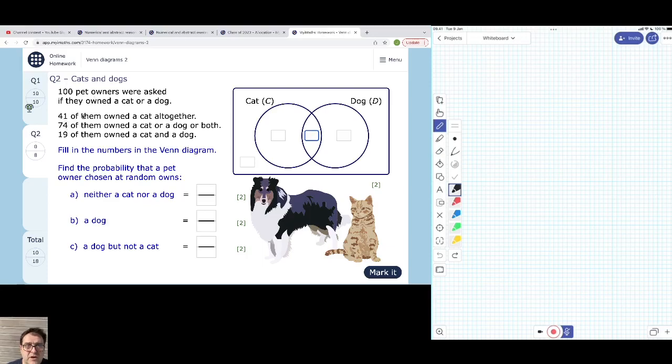41 of them owned a cat altogether. Now, that's slightly misleading wording. What do they mean by owning a cat altogether?